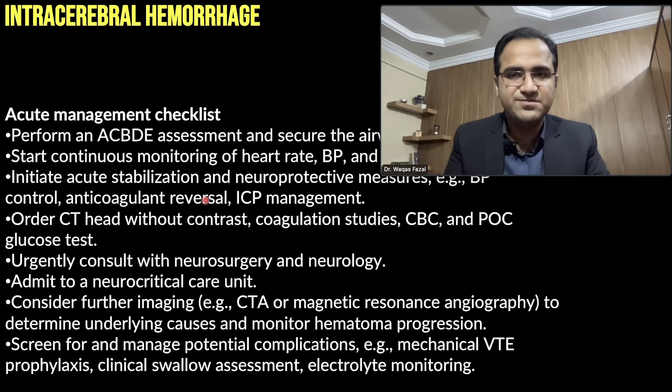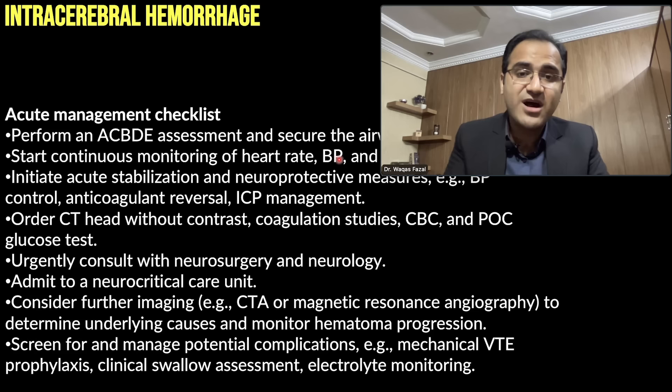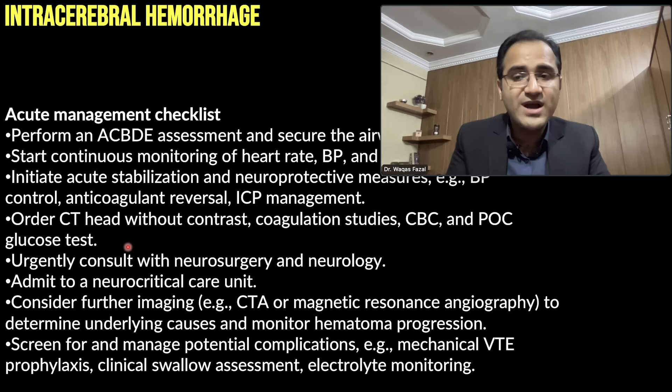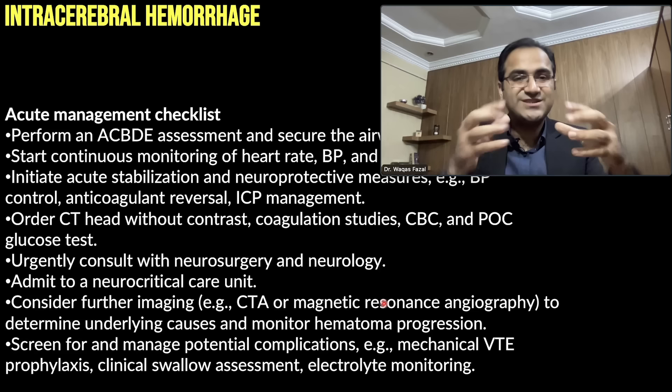The acute management checklist for ICH: approach with ABCD, secure the airway, monitor heart rate and blood pressure, check vitals, initiate acute stabilization and neuroprotective measures, reverse anticoagulation, manage intracranial pressure, order CT without contrast, CBC, coagulation profile, and glucose levels, consult neurosurgery and neurology, admit the patient, and consider CTA or MRA to examine vessel structure for aneurysms or coiling and to monitor hematoma expansion.